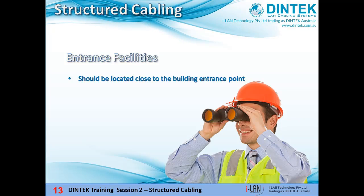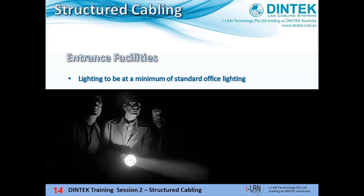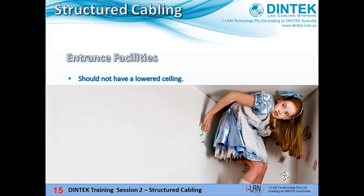There are several technical and OH&S requirements for entrance facilities. They should be located close to the building entrance point. If the leading cable outside ever needs to be replaced or upgraded, you don't want to be running cable through cavities that only existed while the building was being constructed. We also need to consider that conduits and tunnels, both phone carrier and private, when below ground can get gases in them including car exhaust fumes — you don't want that gathering in the middle of the building. They should have adequate lighting, and the ceiling should be standard height so the majority of people can stand up in them.